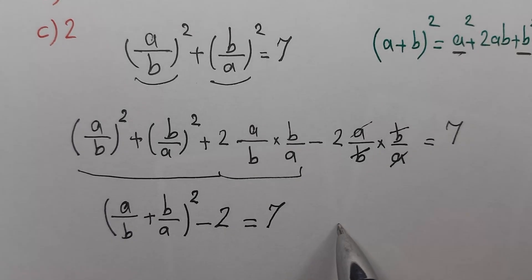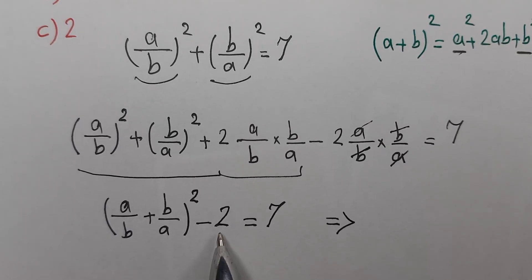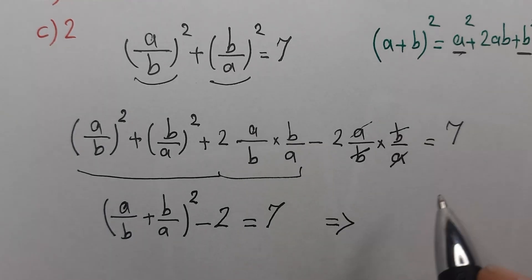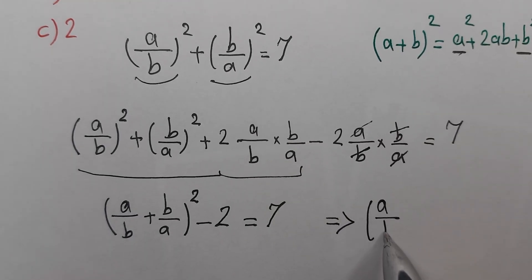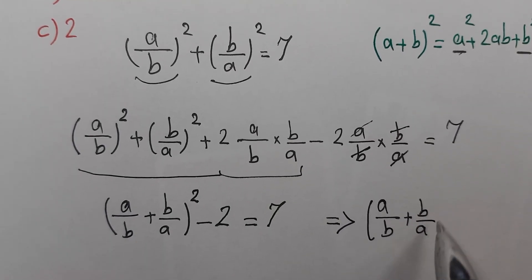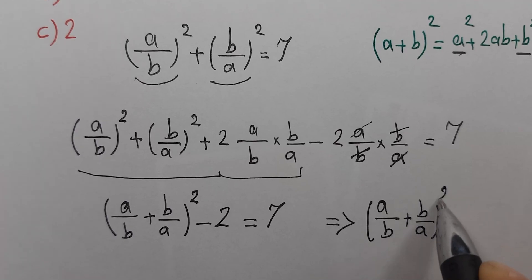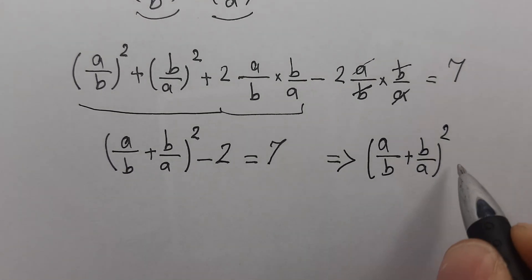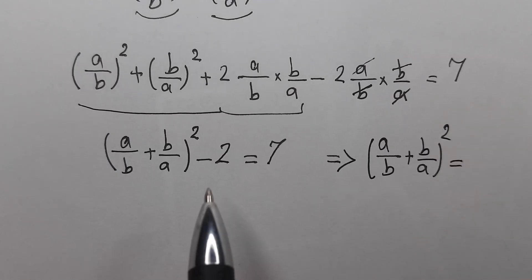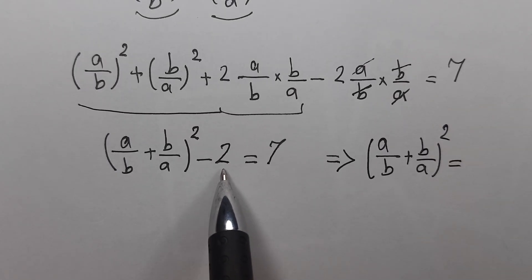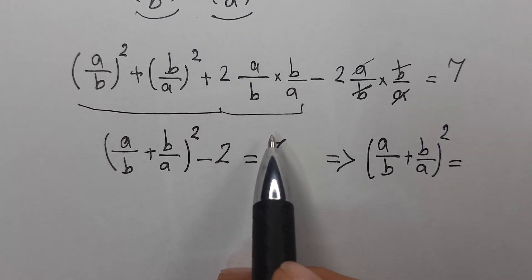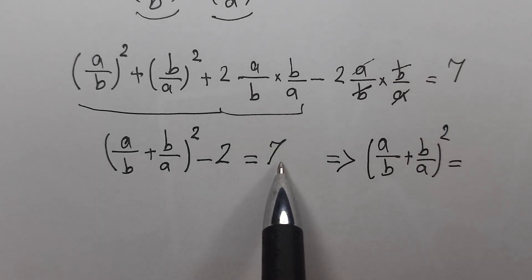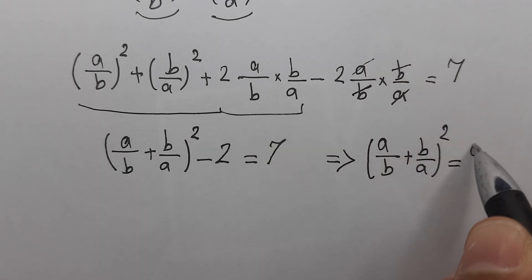We bring minus 2 to the right side, so (a/b + b/a)² equals 7 + 2, which gives us 9.